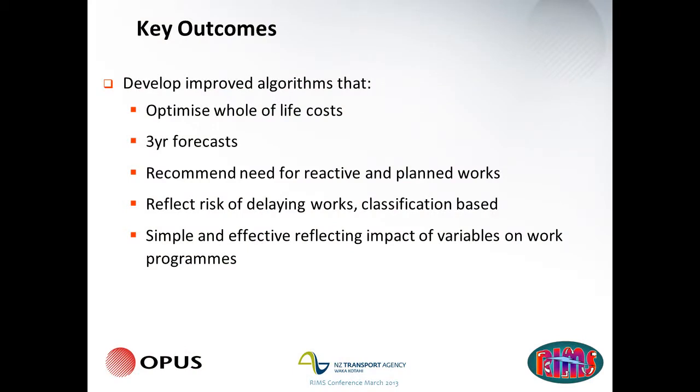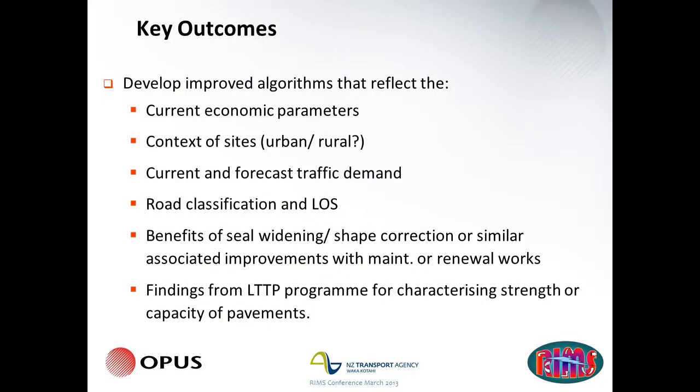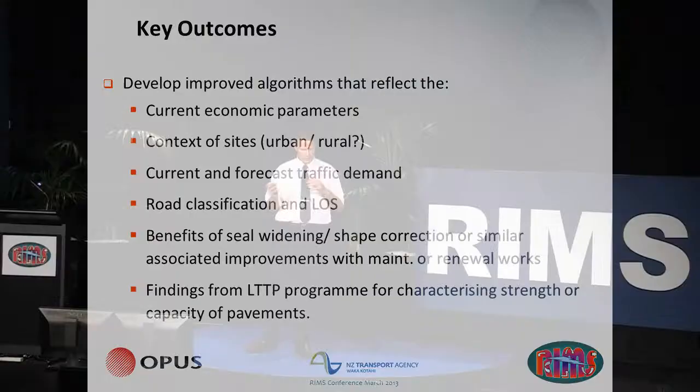We want to develop and improve the algorithm to optimise whole-of-life costs, giving us a good basis of candidate sites for our three-year forecast — not just one or two years, but three years. It should recommend the need for both reactive and planned works, and reflect the risk of delaying work. I think a lot of us are often aware of that on the engineering side, but as Adam was saying, it's not always documented or incorporated into our processes. It also needs to be relatively simple so we can understand what's going on. The algorithm also needs to consider current economic parameters — are they relevant, are they current, and is it actually using them? Are we doing a BCR or an NPV type of analysis?